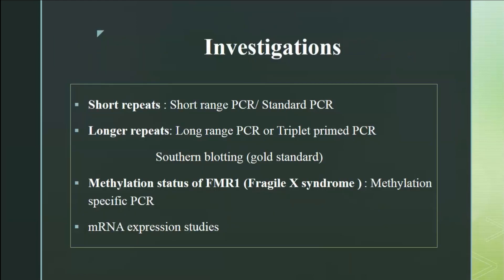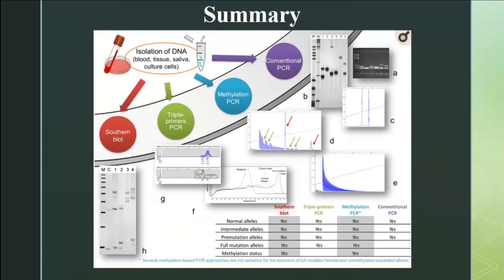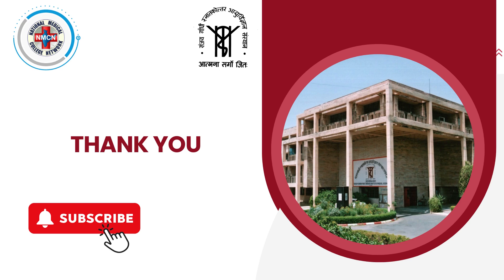For investigation, the current method of choice is TP-PCR — triplet primed PCR. Previously, Southern blotting was also used, but it is cumbersome and involves radio exposure. In Fragile X syndrome specifically, since hypermethylation of the promoter is the mechanism, we can also study the methylation status by MS-MLPA or MS-PCR, and we can do expression studies. Molecular therapies are still in development, but some have reached the clinical stage for Huntington's disease and some types of SCAs.